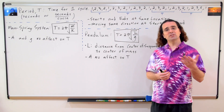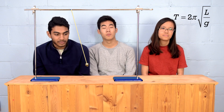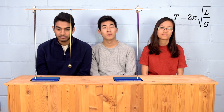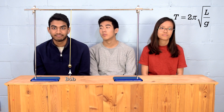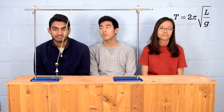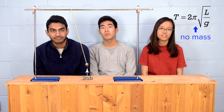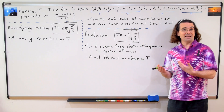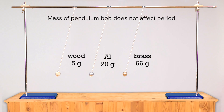Olivia, is the mass of the pendulum bob in the equation for the period of a pendulum? Who is bob? The mass at the end of the pendulum is typically called a bob. Does the mass of the pendulum bob affect the period? The mass of bob is not in the equation, so no, his mass does not affect the period. Correct. As you can see in this demonstration, changing just the mass of the pendulum bob — whether it be wood, aluminum, or brass — does not have any effect on the period of the pendulum. That is why all of these pendulums have the same period.